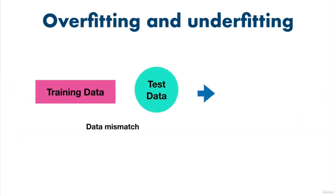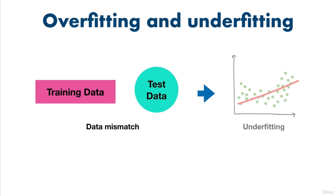Data mismatch happens when the data you're testing on is different to the data you're training on, such as having different features in the training data compared to the test data. Having this kind of mismatch can lead to models performing poorly on test data compared to training data. This is why it's important to ensure that training is done on the same kind of data as you'll be testing on, and as close as possible to what you'll be using in your future applications.